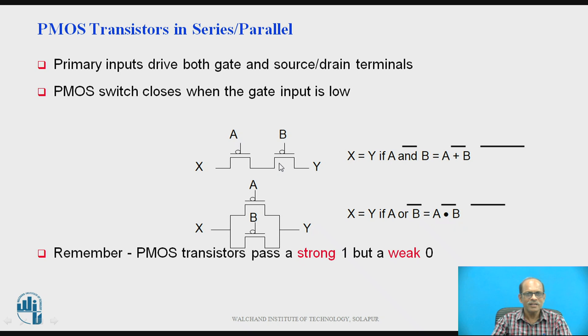So here PMOS are connected in series and parallel. The PMOS will conduct if the voltage applied to the gate is 0 because these are PMOS. So if two PMOS are connected in series, they will conduct if voltage applied to the gate is 0. So for this diagram X is equal to Y if A bar and B bar. So that is A plus B bar.